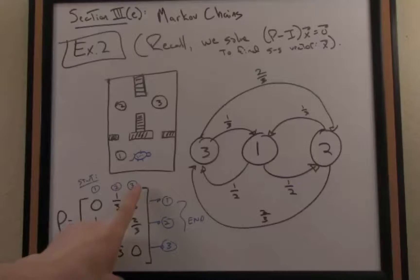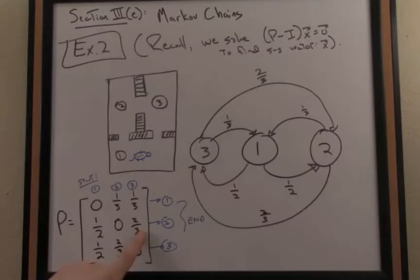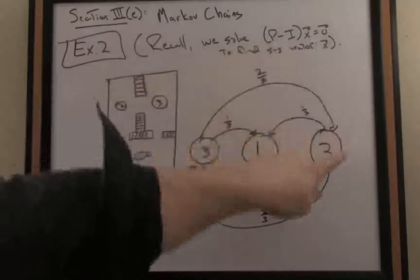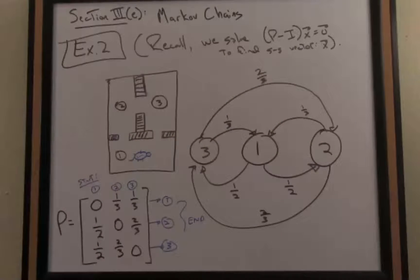If I'm currently in room three, the probability of moving to room two is two-thirds. Let's see that from the directed graph. From three to two, yes, sure enough, is probability two-thirds. So there is our stochastic matrix.